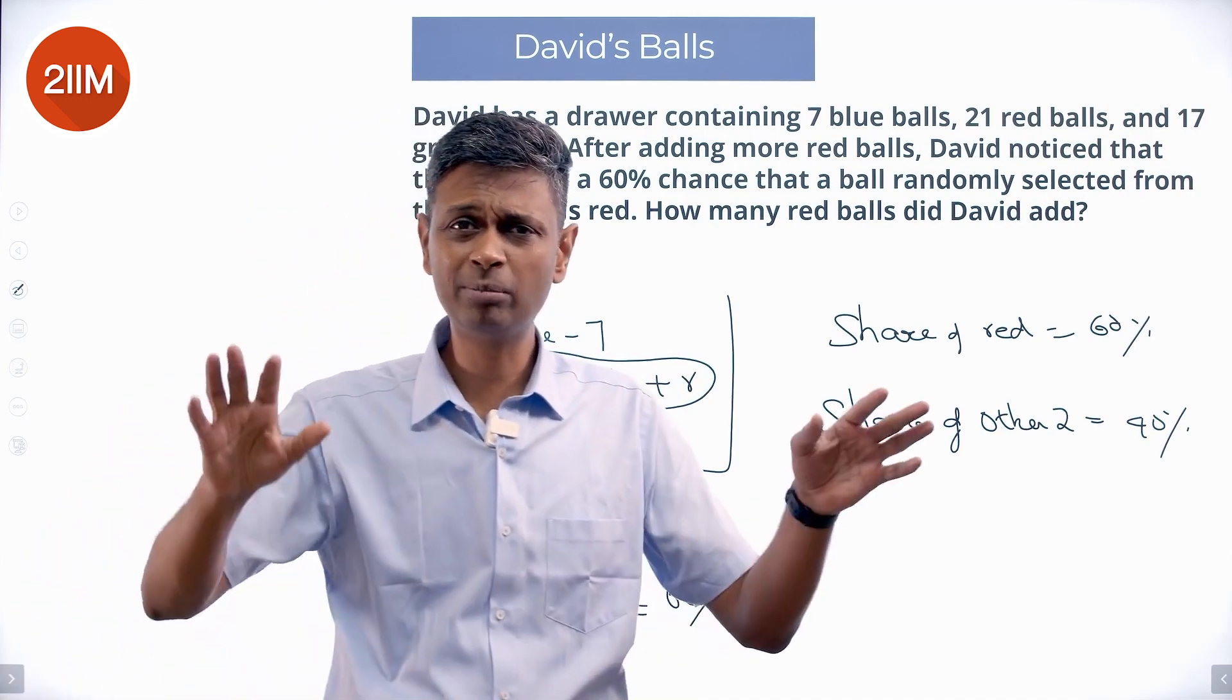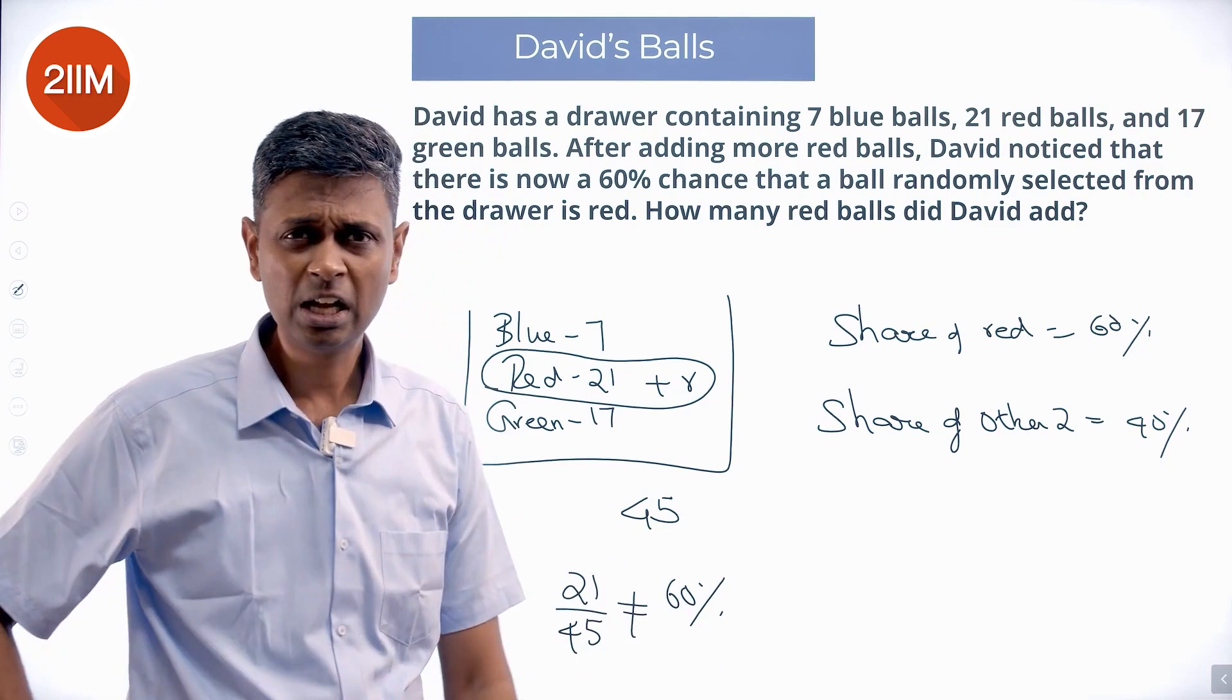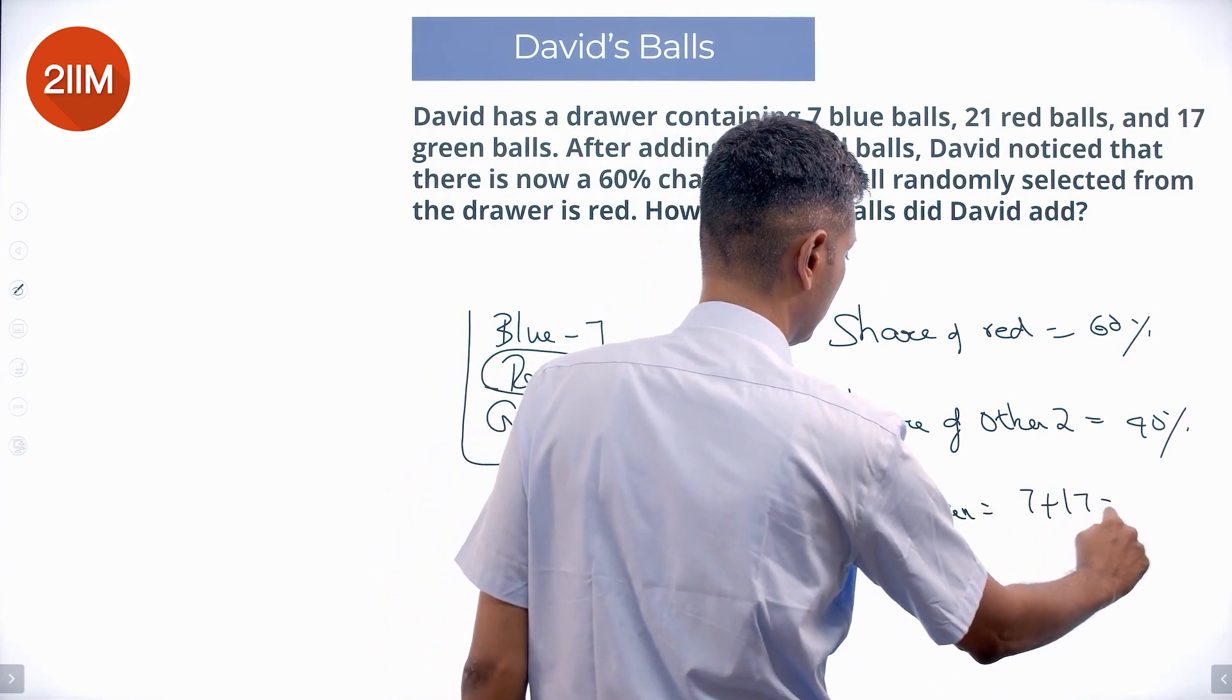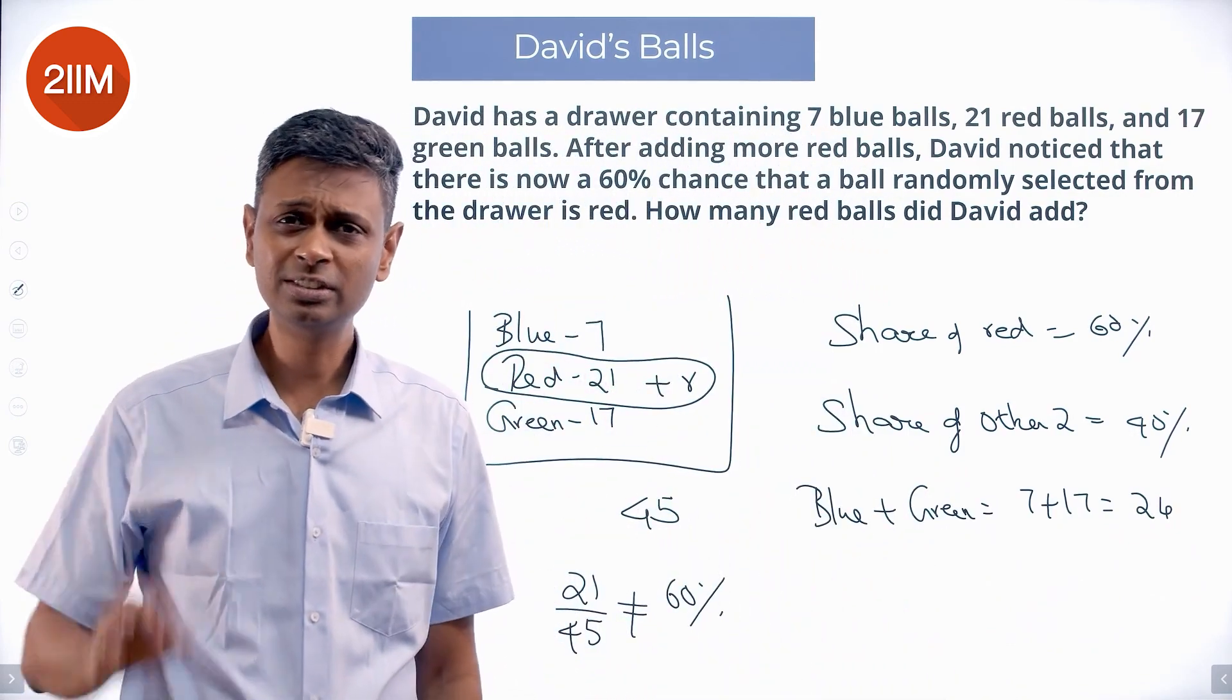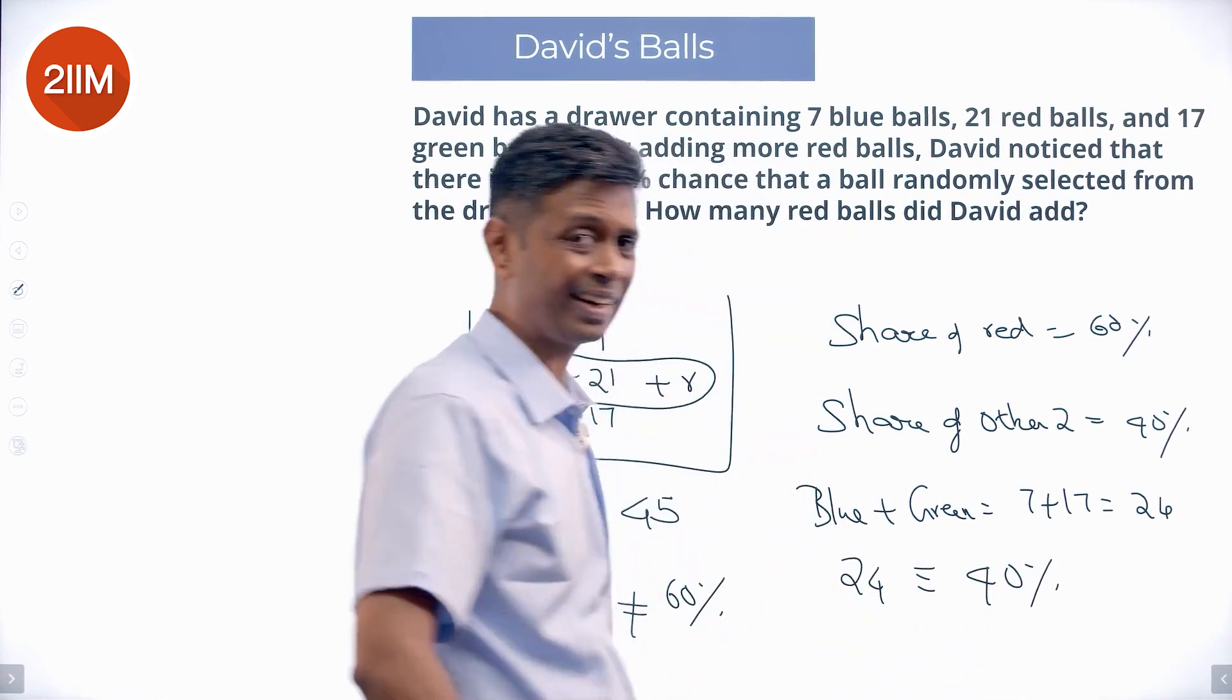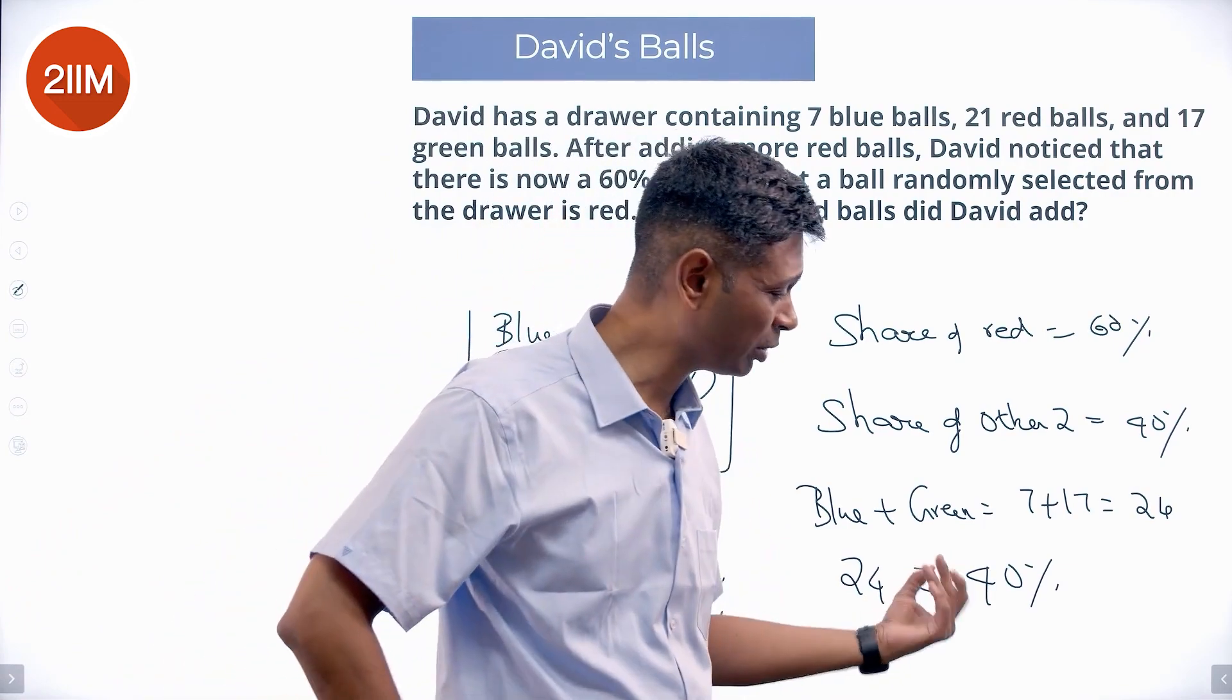I am adding some red balls. I am not adding any blue or green balls. Finally, I know in my box 60% of the balls are red. That means 40% are blue or green. How many blue or green are there right now? Blue plus green equals 7 plus 17 equal to 24. There are 24 blue and green balls. This 24 represents 40%. This 24 corresponds to 40%. The red balls account for 60%, remaining 40% should be blue or green. This 24 balls are there, that accounts to 40% of the total.